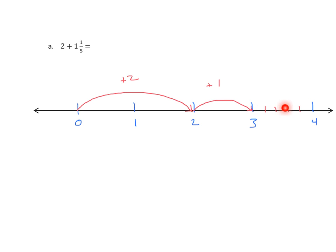If we look at the hops, 1, 2, 3, 4, 5, or I can count the intervals, 1, 2, 3, 4, 5. We're going to add 1 fifth to that, and we'll say plus 1 fifth.